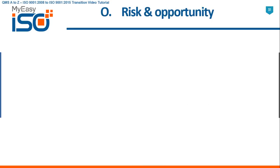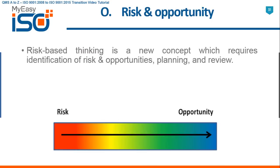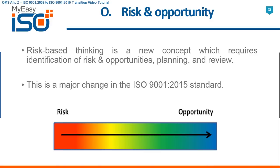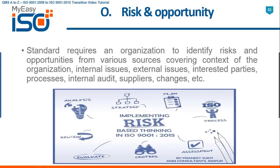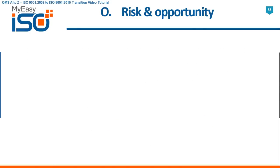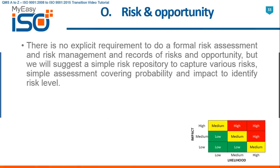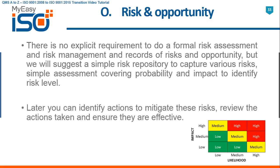O. Risk and Opportunity. Risk-based thinking is introduced with identification of risks and opportunities, planning, and review. This is a major change in ISO 9001 2015. The standard requires an organization to identify risks and opportunities from various sources covering the context of the organization. There is no explicit requirement to do a formal risk assessment and risk management, but a simple risk repository is suggested to capture various risks with a simple assessment covering probability and impact to identify risk level. You can then identify actions to mitigate these risks, review the actions taken, and ensure they are effective.